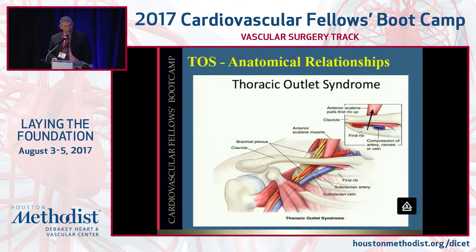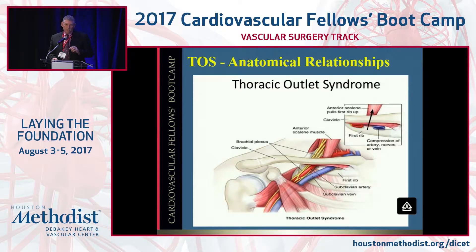The three entities that run through the costal-clavicular triangle — vein, artery, and nerve — and where the compression occurs are discussed here in terms of anatomy.